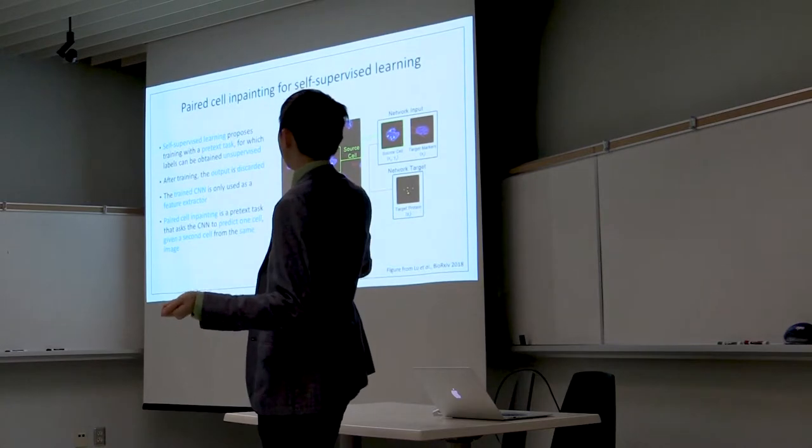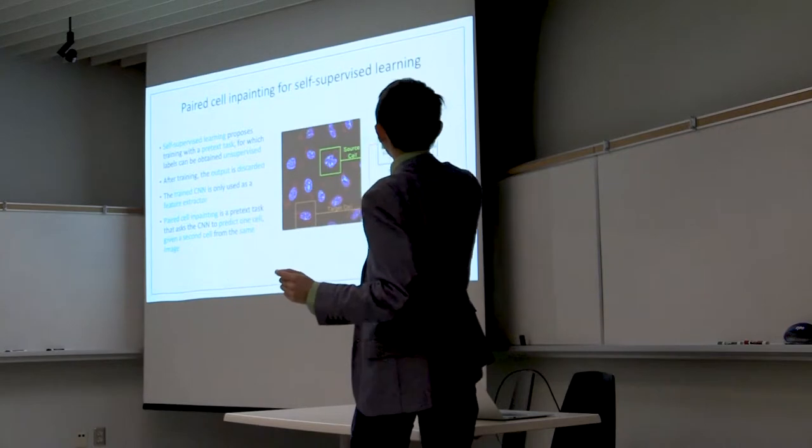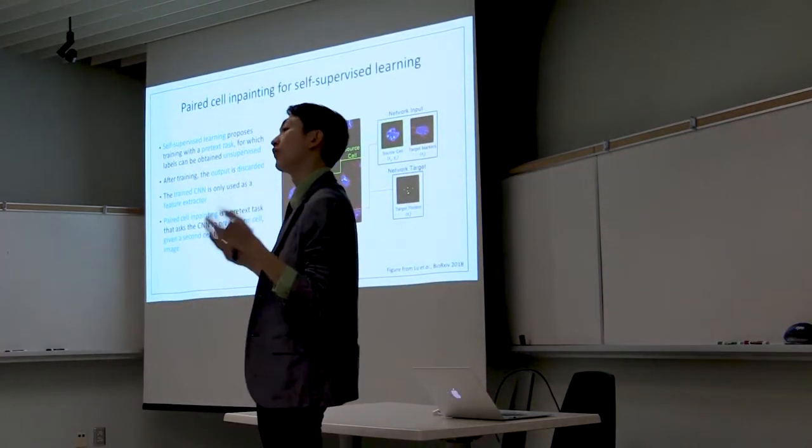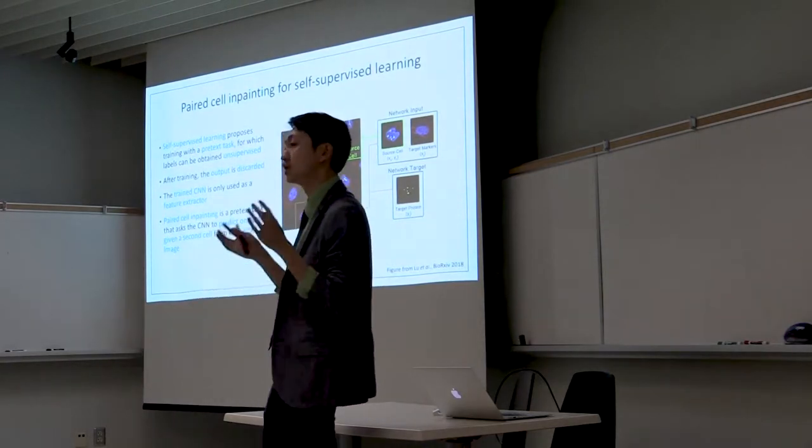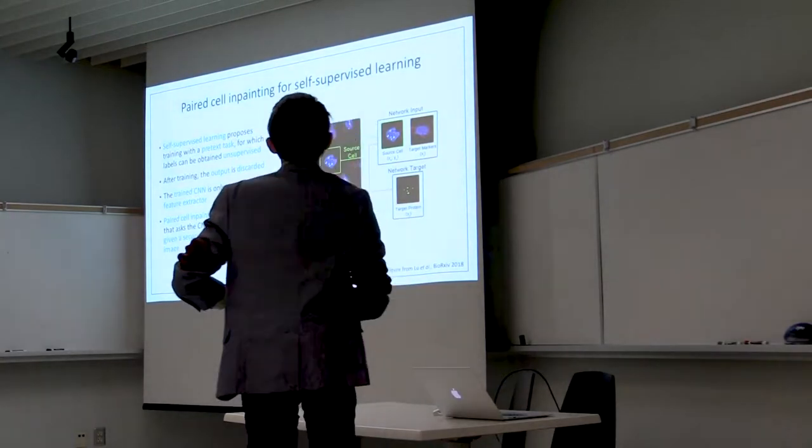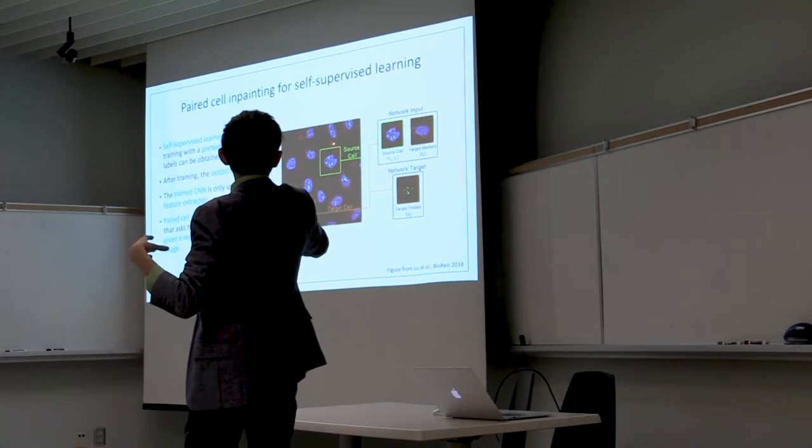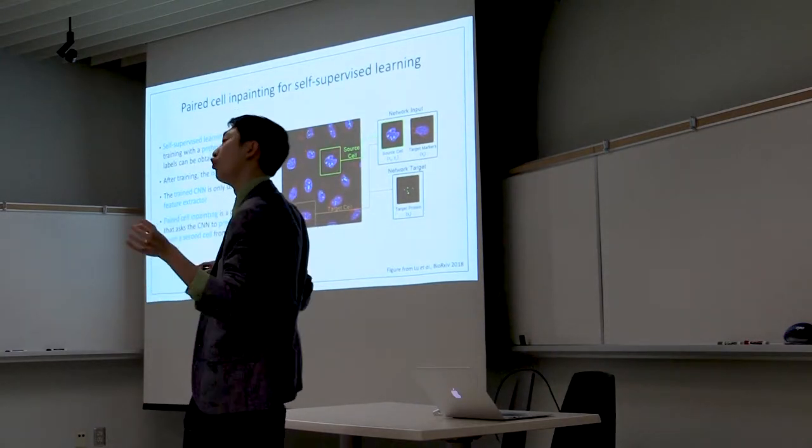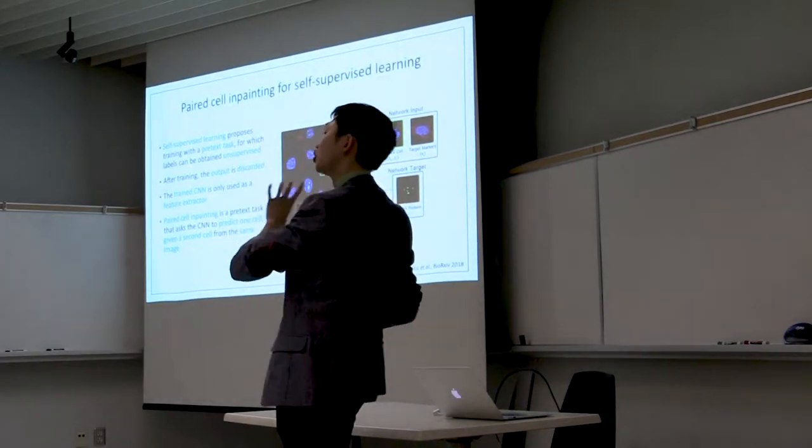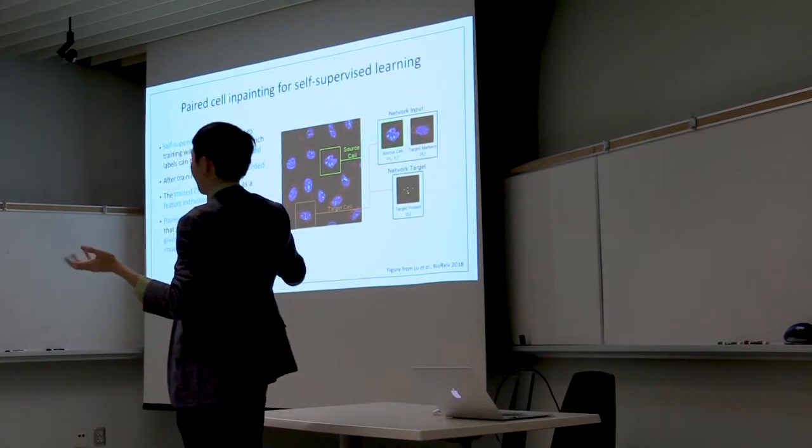Our method is called pair self-imputing, and what it is is a pretext task for self-supervised learning. You're looking at a microscopy image of human cells. And like most microscopy images, there are a lot of different genetically identical cells within the image, and these will have similar characteristics because they've been treated with the same conditions. The blue in this image is the nucleus. The red in this image is a marker for the microtubules. And the green in this image is a protein, which in this case localizes to the nucleus.